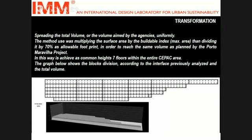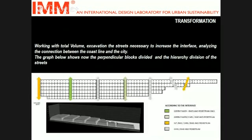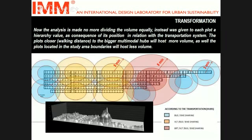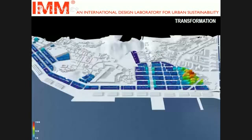For porosity and deciding about density, it was important for us to be faithful to the density decided for the Porto Maravilha project. At the first step, we distributed that density uniformly, reaching the seventh floor for every block. Our mission was to enhance the interface, so we cut through the buildings vertically to provide accessibility, and the buildings get higher. We also cut buildings horizontally, parallel with the seaside. Finally, with the public transportation concentration map, we decided to concentrate more density wherever we have good accessibility to public transportation, so the distribution of density is not uniform.